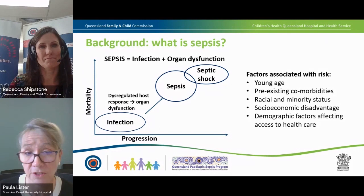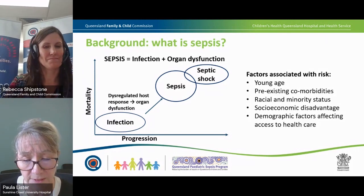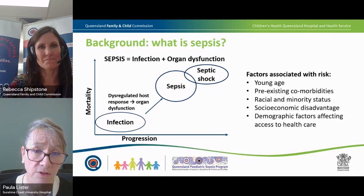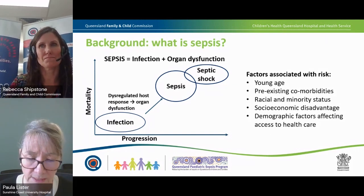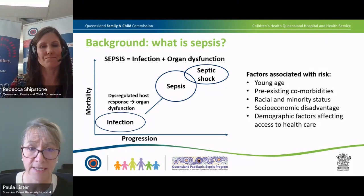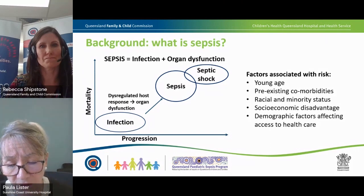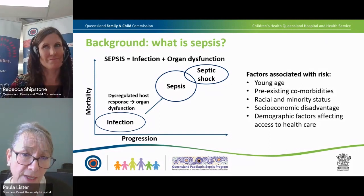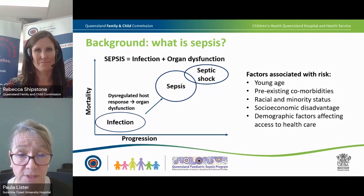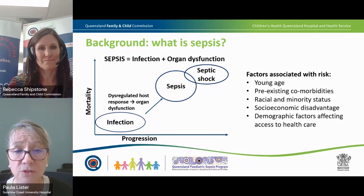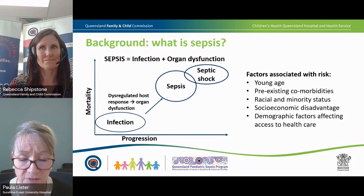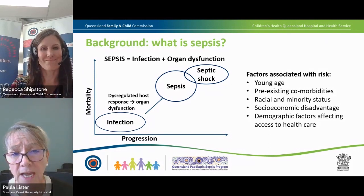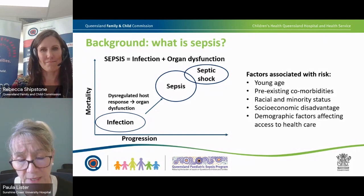The mortality rate goes up as you move from normal infection into sepsis. We know that a quarter of the children who die in pediatric critical care units die from sepsis. Certain things are associated with risk: being particularly young, and having pre-existing comorbidities. However, 50% of children in Australia who have sepsis were previously well, and a third of those who die from sepsis do not have pre-existing conditions. There are also demographic, socioeconomic, and geographic factors — rural, remote, and Indigenous communities are overrepresented.